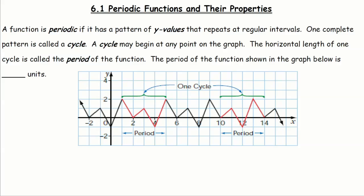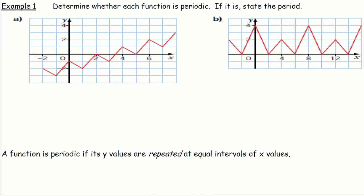The horizontal length of one cycle is called the period of the function. The difference between the starting point and the finishing point of a cycle on the x-axis is the period. Here, at y equals two, x is equal to one. After completing the cycle, x is now five, so five minus one equals four — the period is four units. Looking at the other cycle, going from x equals ten to fourteen is again a difference of four units. The period is always the same in a periodic function.